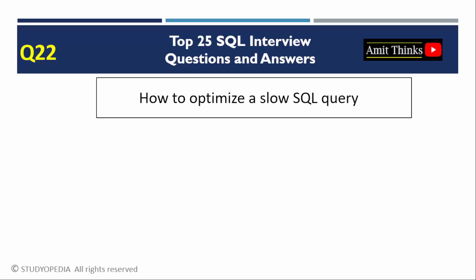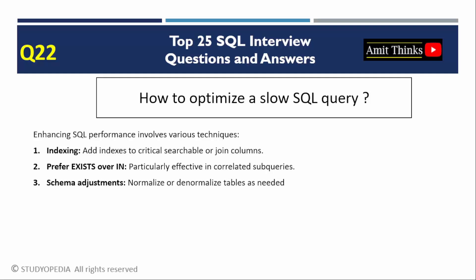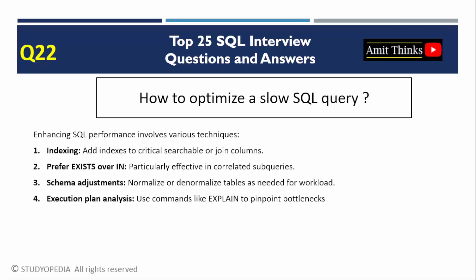Question 22: How to optimize a slow SQL query? Optimization strategies include: indexing (add indexes on filtered or joined columns), using EXISTS over IN for correlated subqueries, normalizing or denormalizing to balance read vs. write needs, and analyzing execution plans using EXPLAIN to identify bottlenecks.